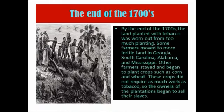By the end of the 1700s, the land planted with tobacco was worn out from too much planting. Some farmers moved to more fertile land in Georgia, South Carolina, Alabama, and Mississippi. Other farmers stayed and began to plant crops such as corn and wheat. These crops did not require as much work as tobacco, so the owners of the plantations began to sell their slaves.